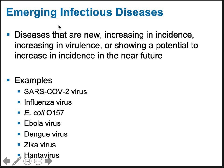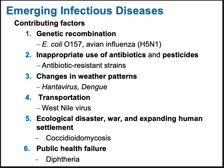An emerging infectious disease can be something completely new — a novel virus — or something that has suddenly increased in incidence, like Ebola outbreaks. It could also increase in virulence, as some Ebola outbreaks are more virulent than others. It could also be something where we know there is potential for a big outbreak in the future.